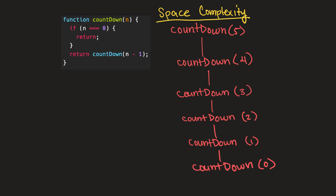To understand space complexity, it's actually quite simple. Since this is a recursive function, each one of these calls exists on the call stack simultaneously. That means if we call our countdown function with five, it's going to call itself with four, and at this point the initial call still exists on the call stack. The same for when we call three — those two calls still exist on the call stack. All the way down until we reach our base case, every single one of these calls still exists on the call stack, and each one of these calls takes up memory.